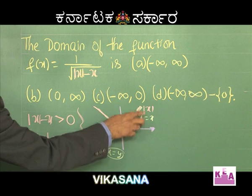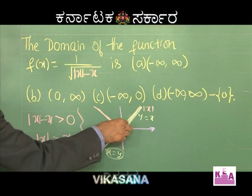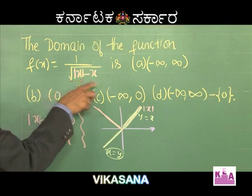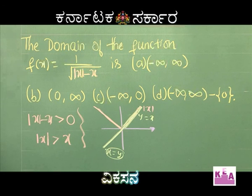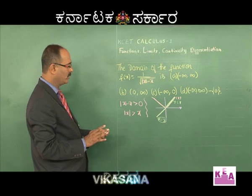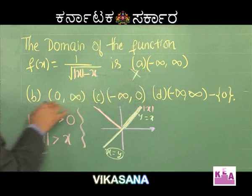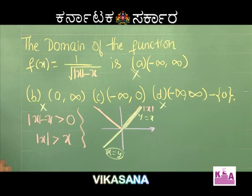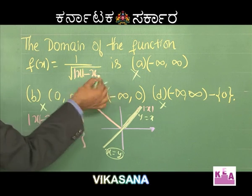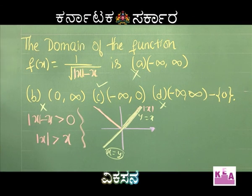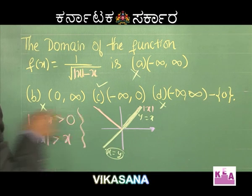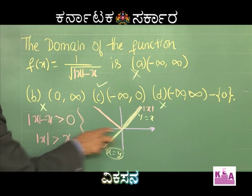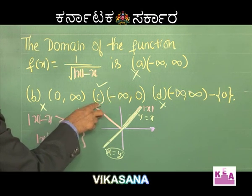When x is positive, y = x is the same as y = |x|, making the denominator 0 and f(x) infinite. So 0 to infinity is a ruled out case — option A and option B are ruled out. Option D is also ruled out because it includes 0 to infinity. For x negative, y = |x| is above y = x, so |x| is greater than x. Therefore x belongs to minus infinity to 0, and option C is correct.